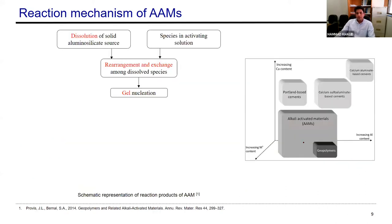We also have some blended systems where we can blend high calcium and low calcium types in a certain composition, and we end up with blended systems. I will talk briefly about why we need this, and about the benefits or drawbacks of each of these high and low calcium types. But before going to that part, let me explain a little bit about the basic chemistry of these materials.